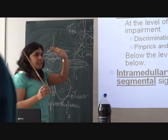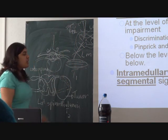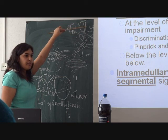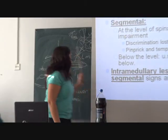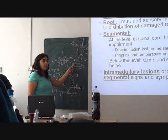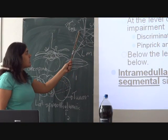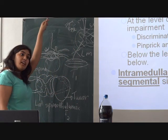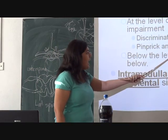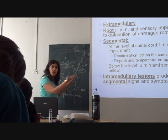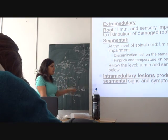The same thing applies to sensation. You have the spinothalamic tract, which crosses over in the spinal cord, and the dorsal column, which goes up and crosses in the medulla. If there is damage at T12, because the spinothalamic crosses over, you will lose pain and temperature on the opposite side. Your discrimination will be lost on the same side. And below the level of the lesion, you will lose all sensation — because no spinothalamic tract or dorsal column fibers can be formed below that point.